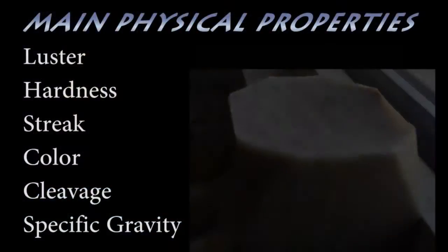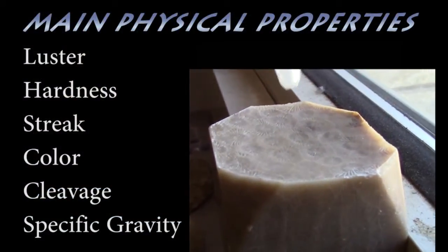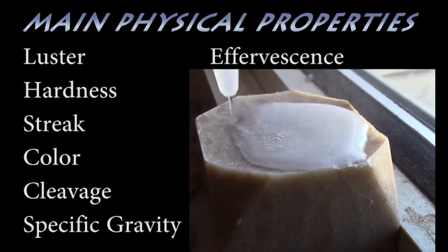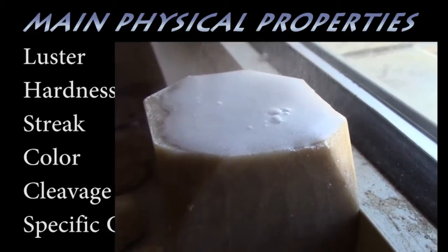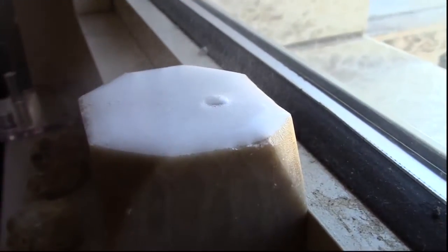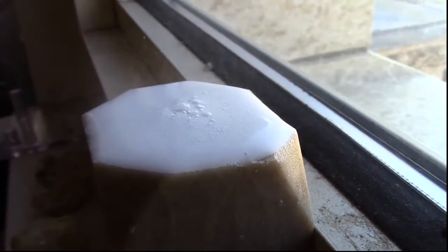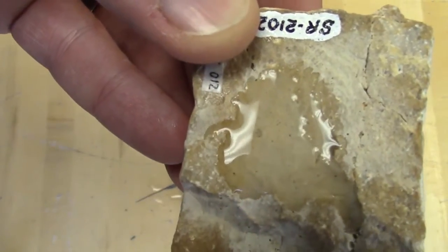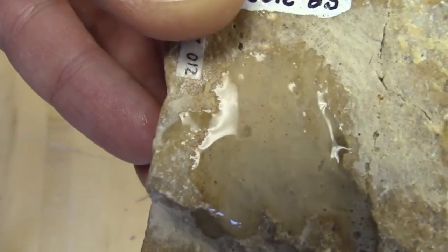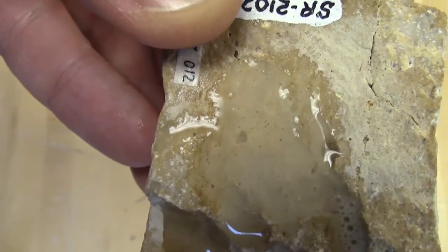Another common test is to put hydrochloric acid on the mineral and look for a bubbling reaction we call effervescence. This is the diagnostic test for the carbonate minerals. Calcite effervesces vigorously with hydrochloric acid, while dolomite only weakly reacts, and often needs to be turned to surface area-rich powder before the reaction becomes evident.